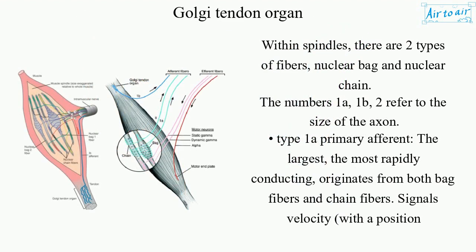Within spindles, there are two types of fibers: nuclear bag and nuclear chain. The numbers 1a, 1b, and 2 refer to the size of the axon.